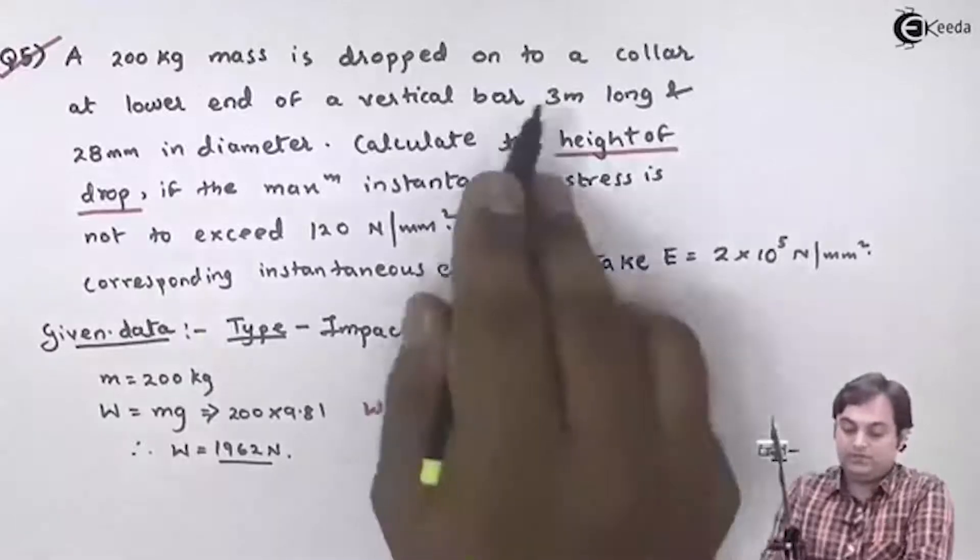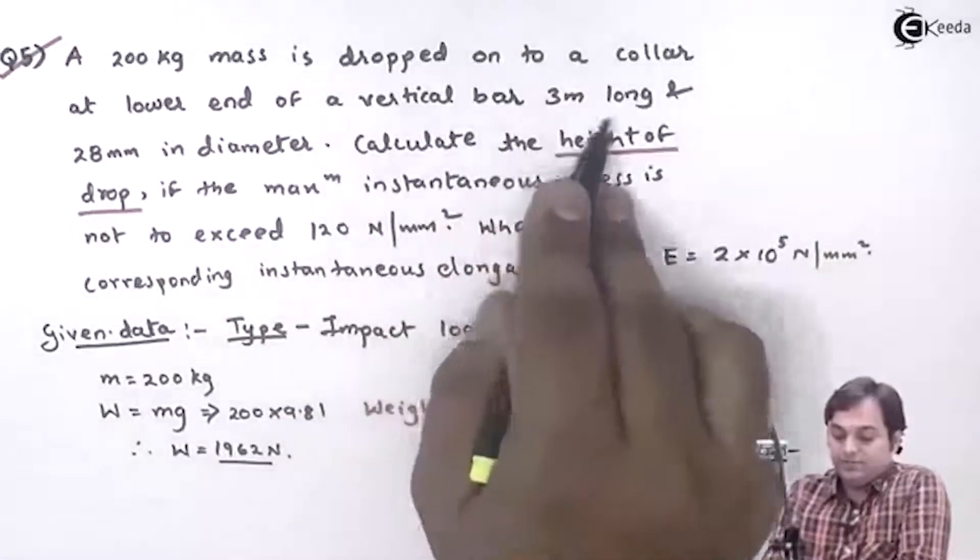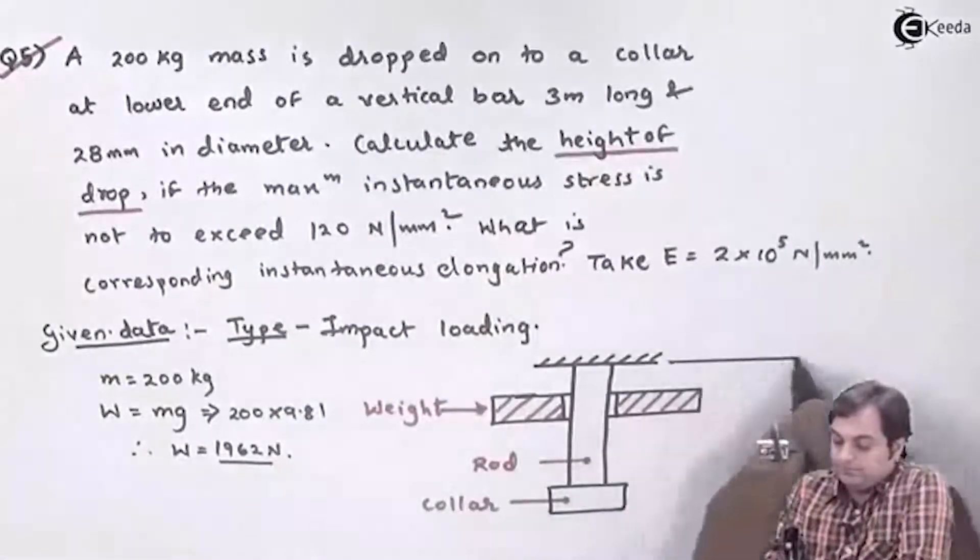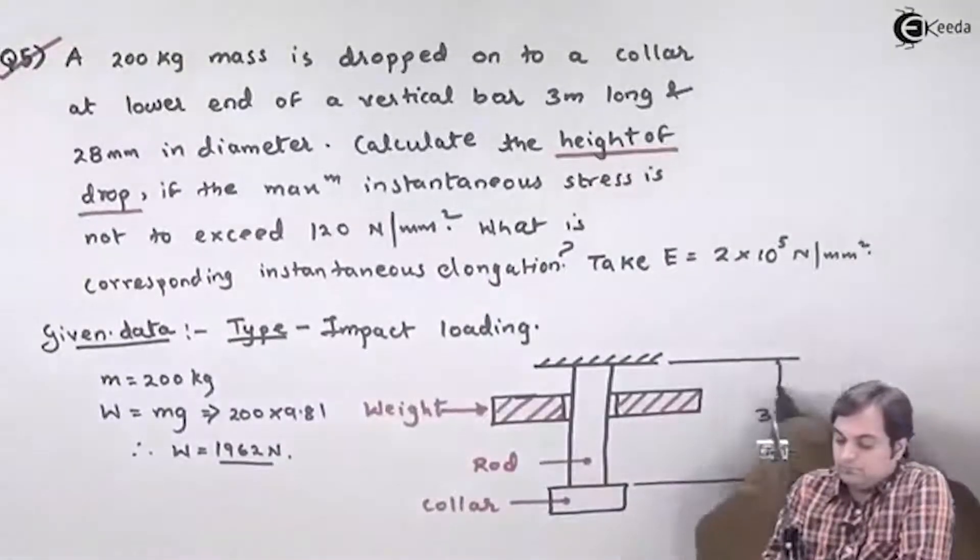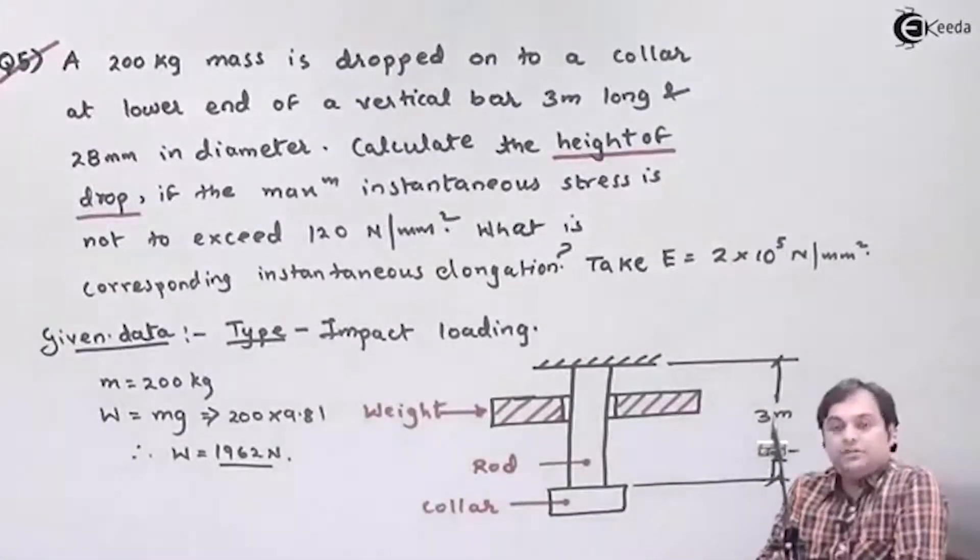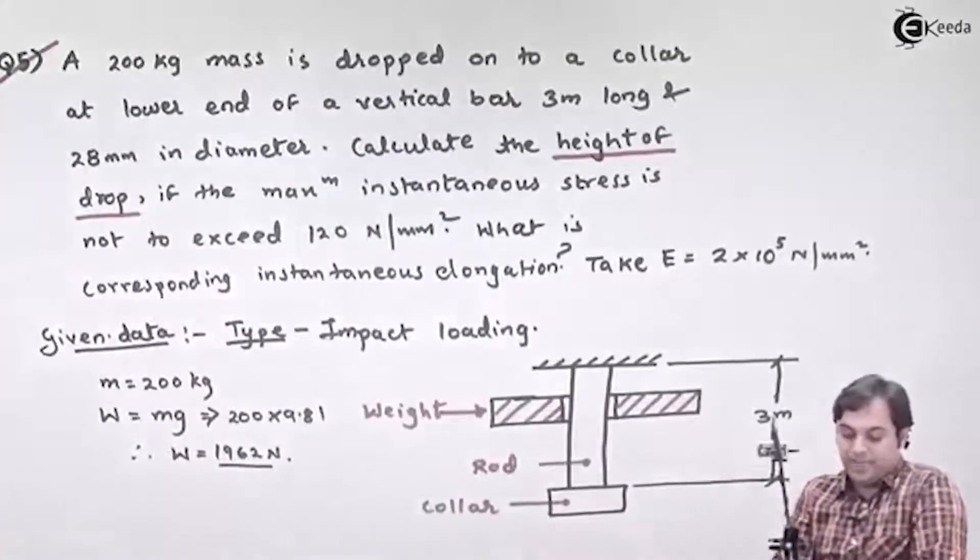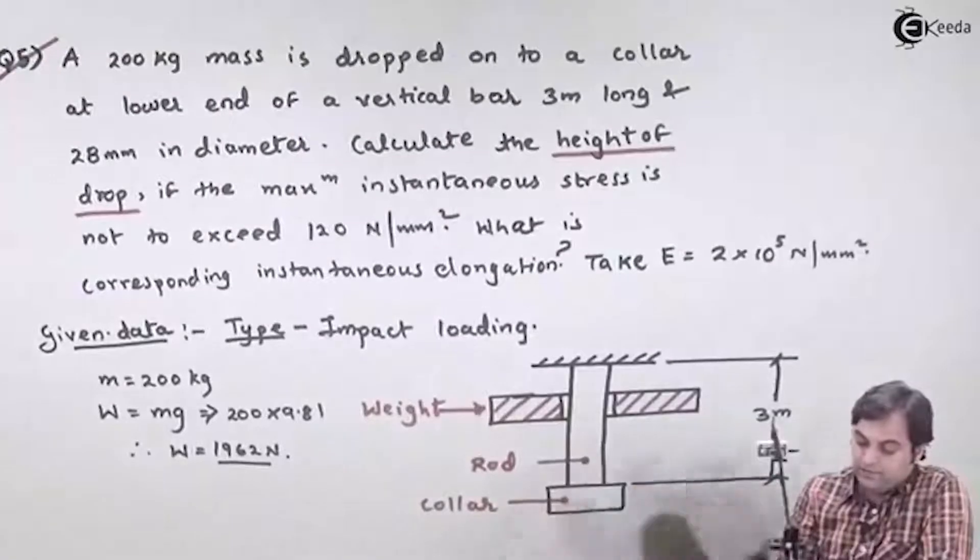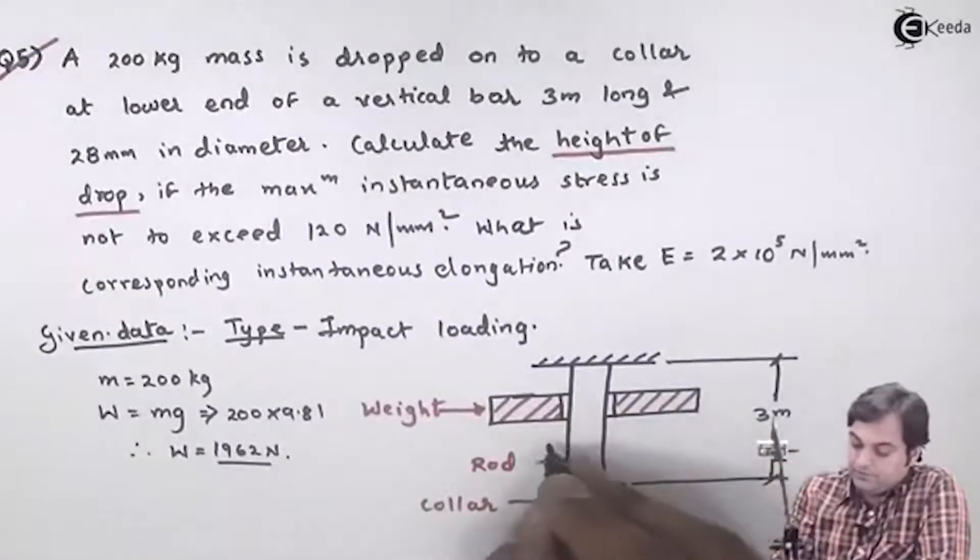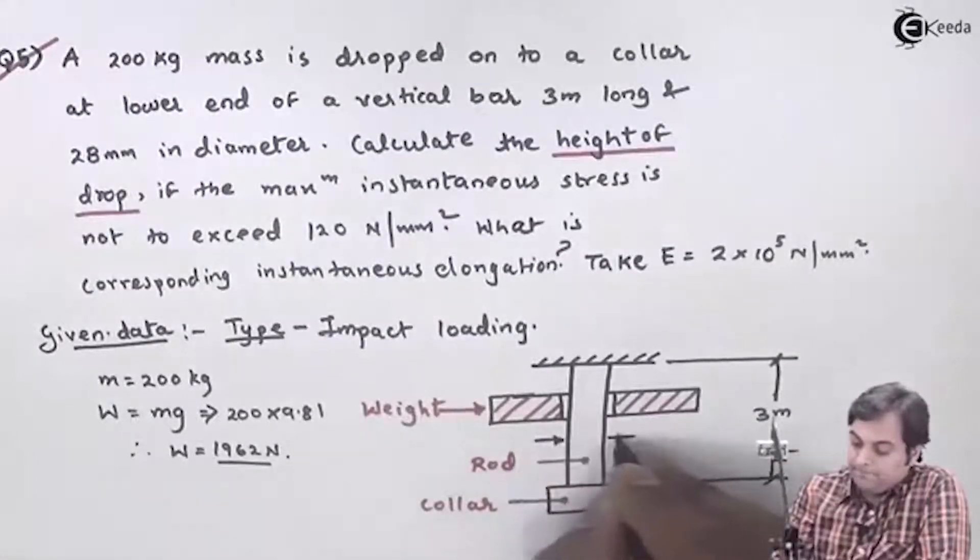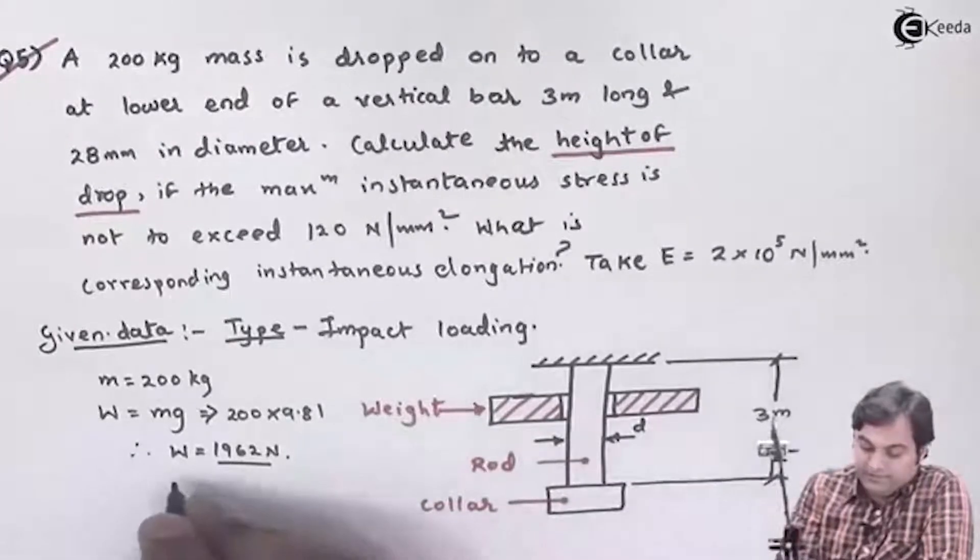Next, it is attached to the lower end of a vertical bar 3 meters long. The diameter of the rod is 28 mm.